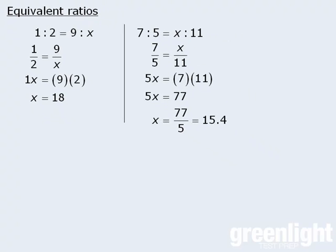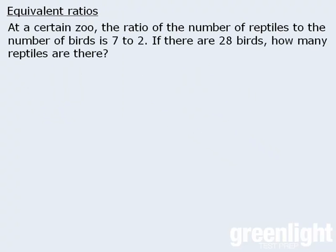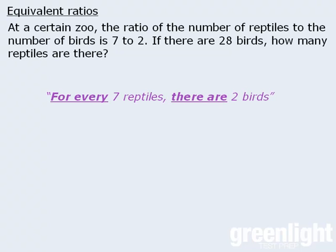Now let's tackle a word question involving equivalent ratios. We are told that at a certain zoo, the ratio of reptiles to birds is seven to two, and there are 28 birds. We must find the number of reptiles. This question features the word ratio, so we know it's a ratio question. We also know because we can rephrase the information to read: for every seven reptiles there are two birds.